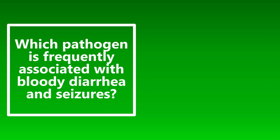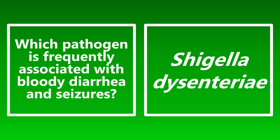Which pathogen is frequently associated with bloody diarrhea and seizures? There are several pathogens associated with bloody diarrhea, but the one associated with both bloody diarrhea and seizures is Shigella dysenteriae. If you're thinking about a pathogen with bloody diarrhea and seizures, think Shigella.